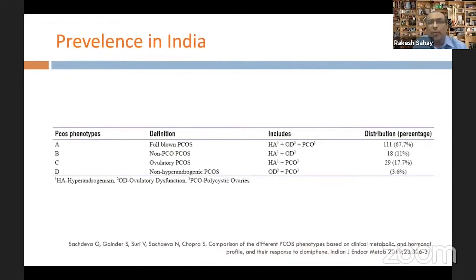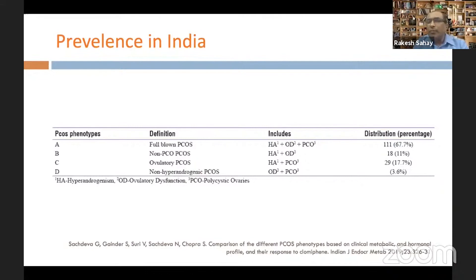Looking at the prevalence of these phenotypes, a recent study from India published in the Indian Journal of Endocrinology and Metabolism showed the highest prevalence for phenotype A at 67.7%, phenotype B at 11%, the ovulatory phenotype C at 17.7%, and phenotype D at the lowest prevalence of 3.6%.